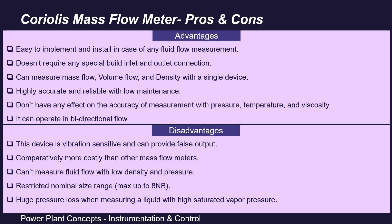Disadvantages include: measurement is affected by any gas inclusion in the fluid flow, the device is vibration sensitive and can provide false output, and it is comparatively costlier than other mass flow meters. It has a limited temperature range, cannot be used to measure fluid flow with low density and pressure, is restricted to nominal bore line sizes of up to 8 inches, and produces a large pressure loss when measuring liquids with high saturated vapor pressure.